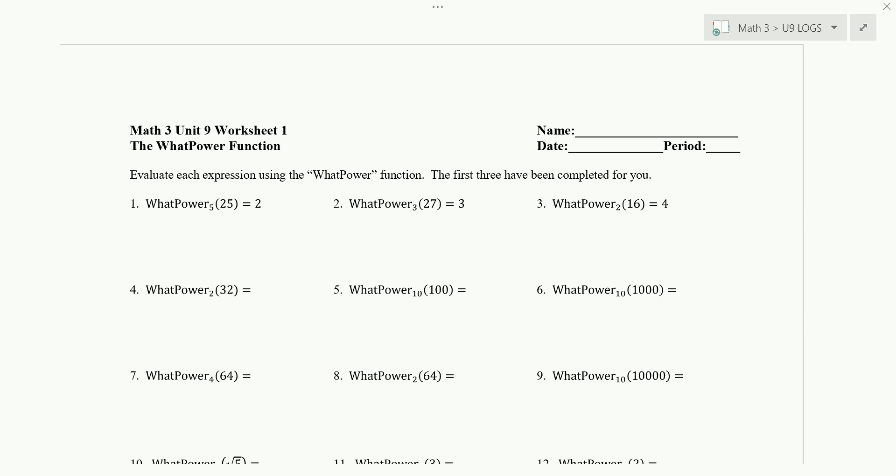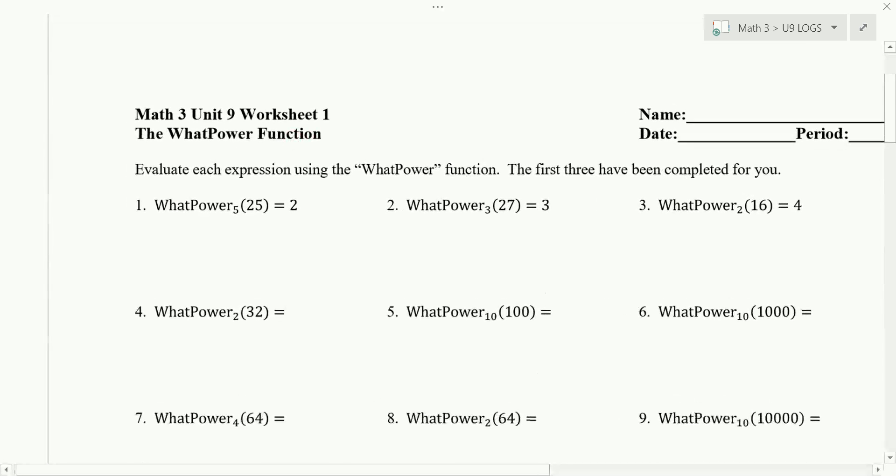If we look at number 1, the reason what power base 5 of 25 is equal to 2 is because this is asking the question 5 to what power is 25, and we can see that that power should be 2. So the answer to all these questions is going to be a power, and therefore that's why we call it the what power function.